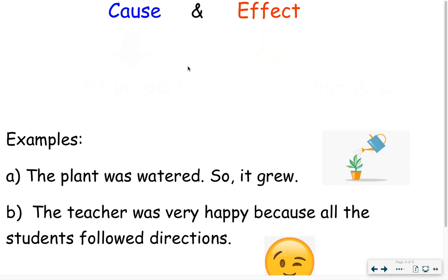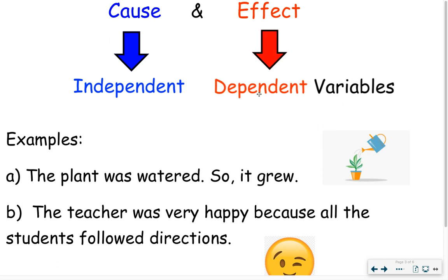In language arts, you probably are familiar with the concept of cause and effect. Well, in science and in math, these two terms go by different names. The cause is known as the independent variable and the effect is known as the dependent variable because the effect depends on the cause or it depends on the independent variable to get a result.